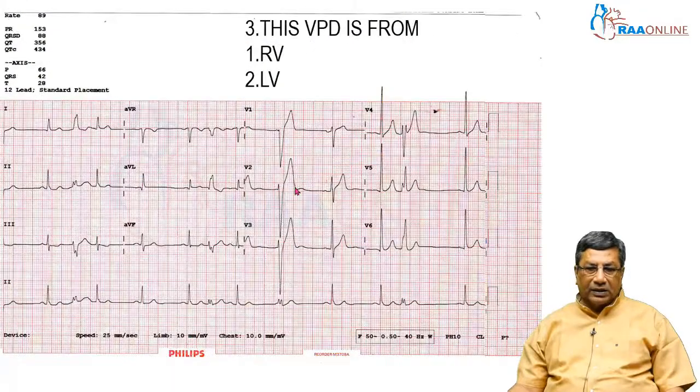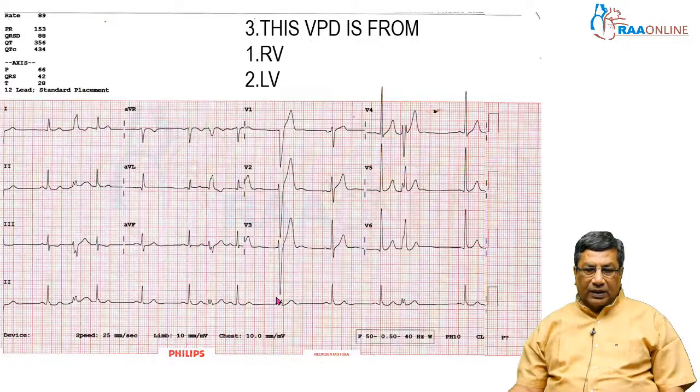Now, you can see the ECG, and we are asking — this is a VPD. This is definitely a ventricular premature beat.